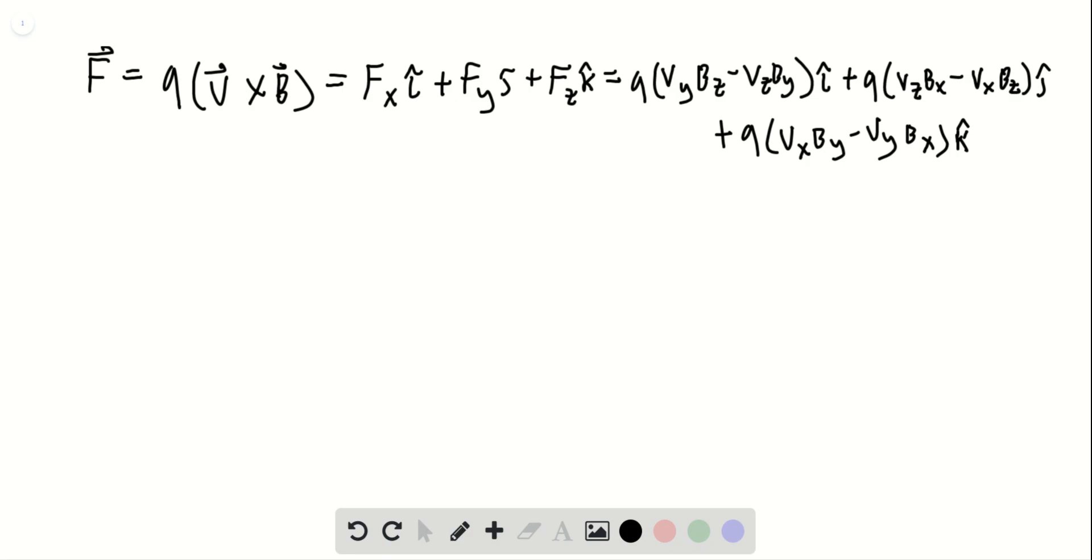Okay, so if we plug in all the values given, we get three equations. So 4 equals 2 times 4bz minus 6by. We have negative 20 equals 2 times 6bx minus 2bz. And finally, 12 equals 2 times 2by minus 4bx.